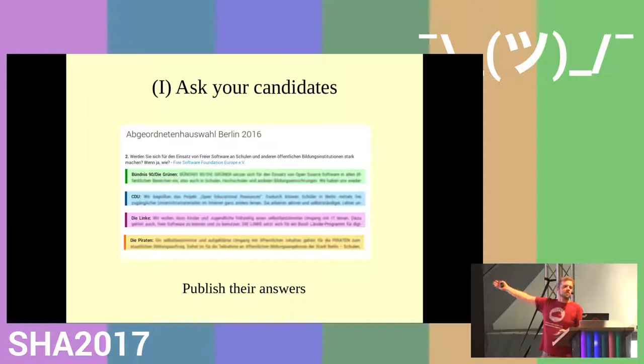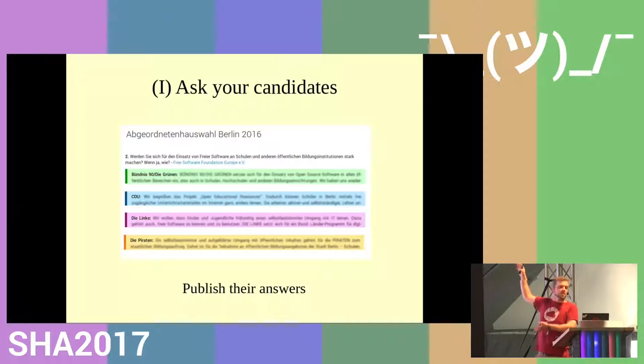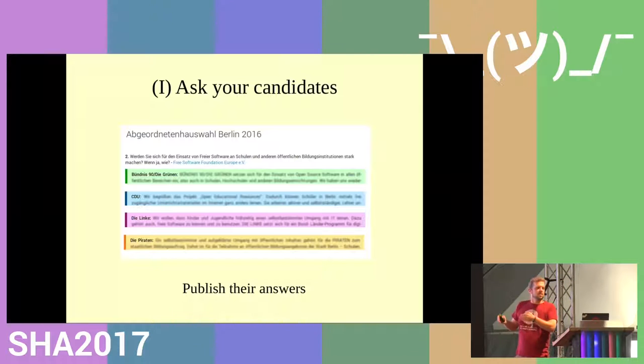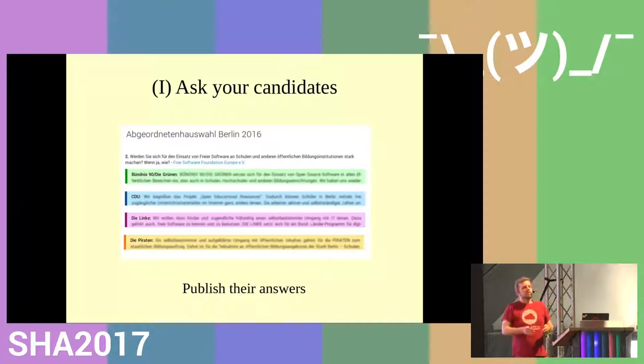However, if you have eight questions and eight participating parties, this becomes a huge text — a text desert — and it's not very appealing for people to read through. So as the next step you should analyze it, comment on it, and ideally make a press release. Make a summary, tell people which parties are in favor of your topic and which are not. Write it up as if you would be a journalist and publish the press release.